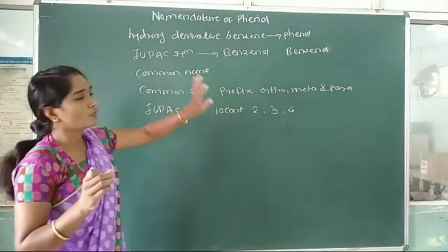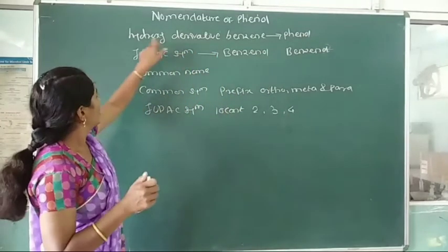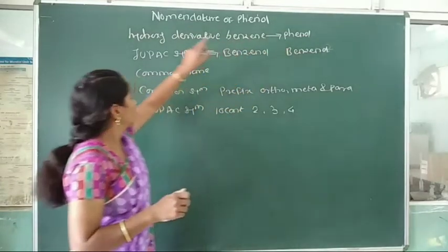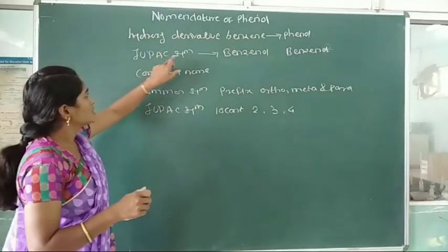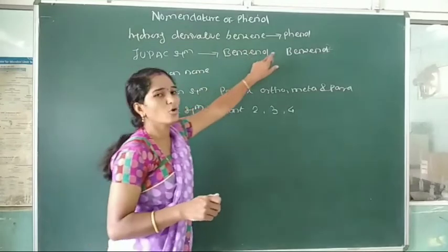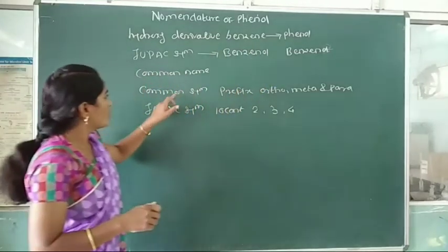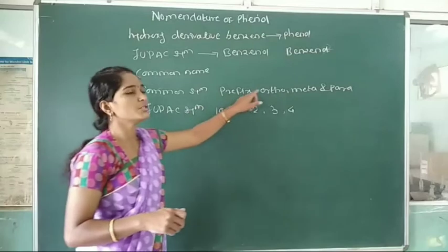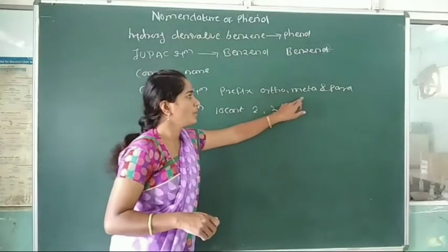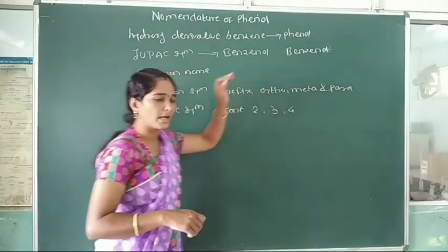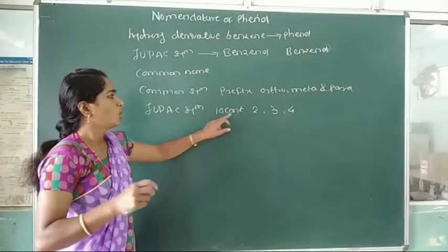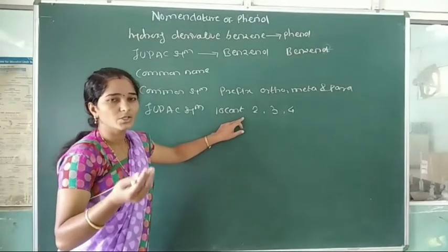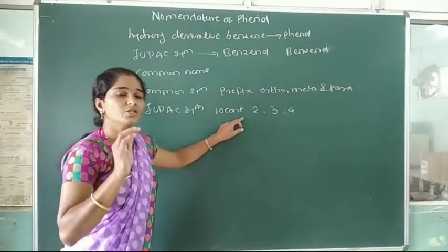This is the nomenclature of phenol. A hydroxy derivative of benzene is called as phenol. In the IUPAC system, phenol is named as benzenol. In the common system, the ortho/meta/para prefix system is used. In the IUPAC system, the locant number of the carbon atom bearing the substituent is used.